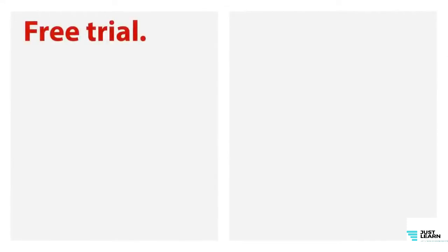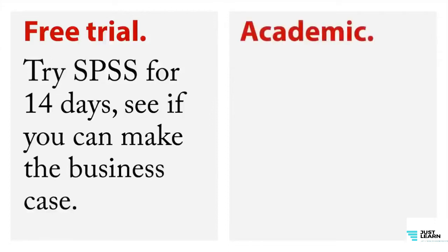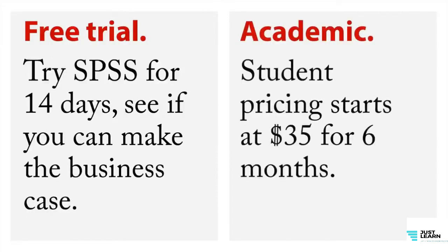However, don't panic — there are other ways besides having to sell your house to get SPSS. Number one, there is a free trial and you can download SPSS and try it for 14 days. There is also academic pricing — student pricing for SPSS starts at $35 for six months. It's not the super-duper version, but it is absolutely sufficient for doing the majority of academic research.